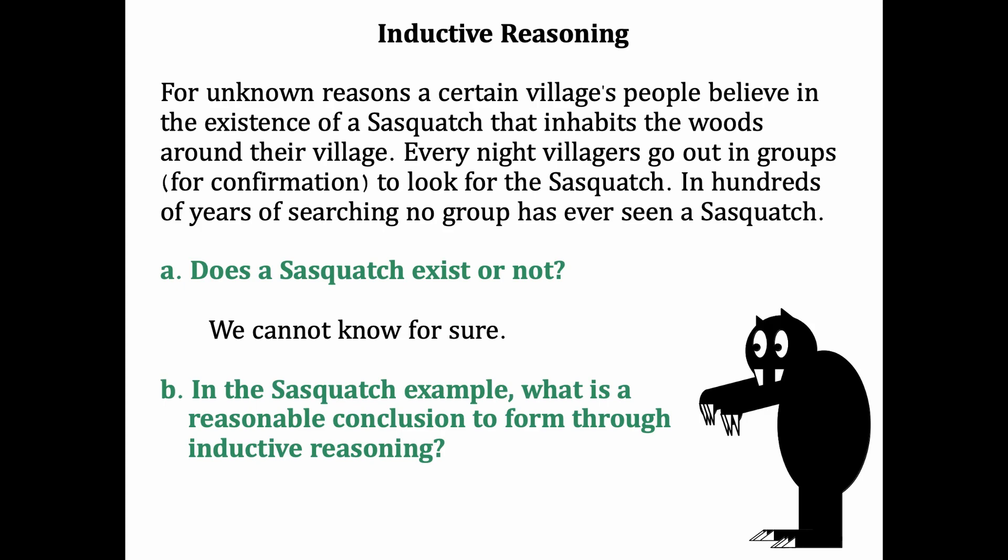But in the Sasquatch example, what would be a reasonable conclusion to form? If the villagers continue to look for Sasquatch, they won't find one. It should be written as an if-then statement, where the evidence from the past is extrapolated to draw a conclusion about what will happen in the future, even though we don't know that it's certain.